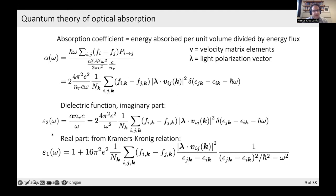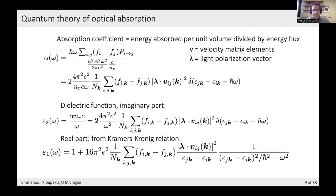The imaginary part of the dielectric function can be derived from the absorption coefficient, yielding an equation involving a delta function and matrix elements. The real part is obtained via the Kramers-Kronig relation as a sum over all bands without the delta function — requiring a sum in principle over all bands up to very high energies. With these two equations for epsilon₁ and epsilon₂, you have all the optical properties of your material.